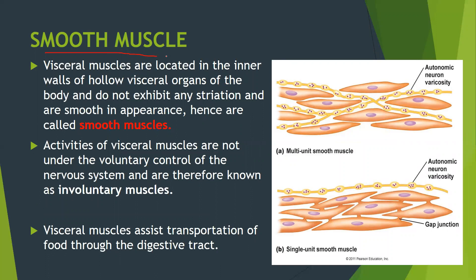Next are smooth muscles. They are known as smooth muscles because they do not have any striations — they appear smooth. They are spindle-shaped and uninucleated. They are also known as visceral muscles and are located in the inner walls of the hollow visceral organs. These muscles are not under our control; they are involuntary — contraction and relaxation takes place on their own. They assist in transportation of food through the digestive tract.